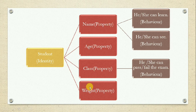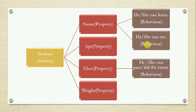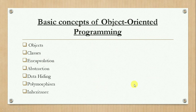The student object has some properties: name, age, class, and weight — these are the features. Then there are some behaviors of a student, like he or she can learn, can see, can pass or fail the exam. So these are the behaviors of the object student. An object has some properties and some behavior, and it is an identifiable entity.